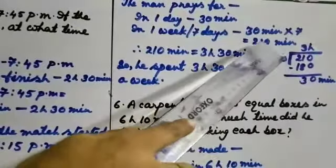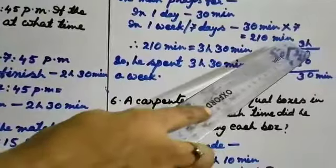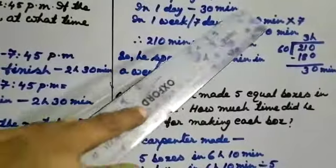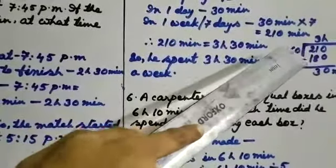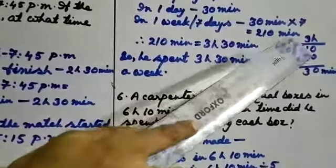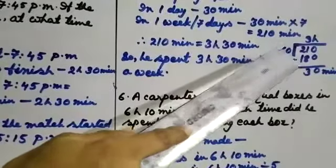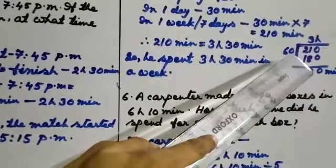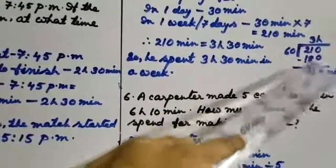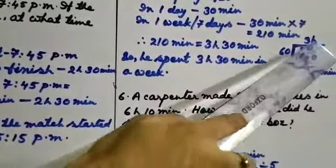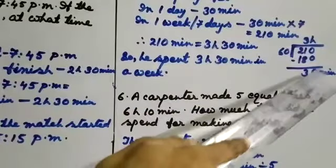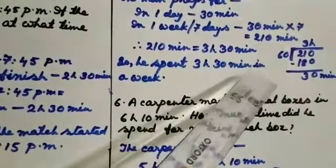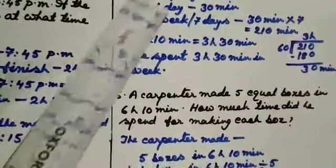Clear? So these minutes you will convert into hours and minute times. How you will convert? For that you need to divide with 60, because 60 minutes is equal to 1 hour. So 210 divided by 60, you are getting 3, that is 180, remainder 30. That means this is hour time and this is minute time. So he spent 3 hours 30 minutes in a week. Clear?